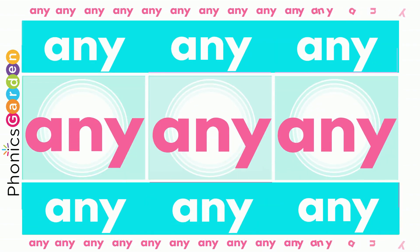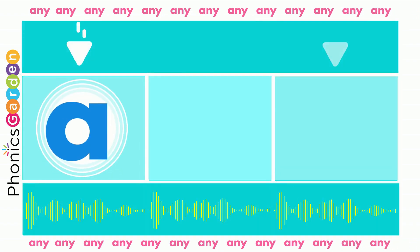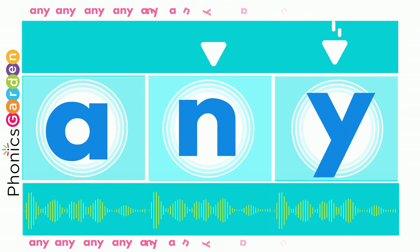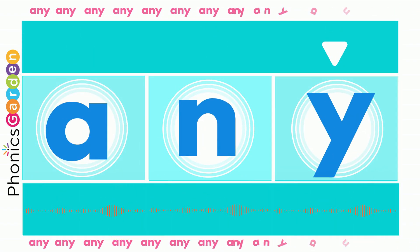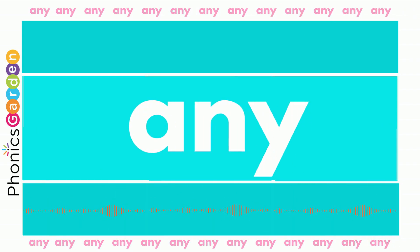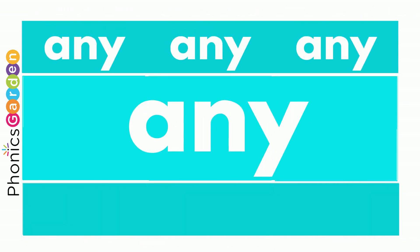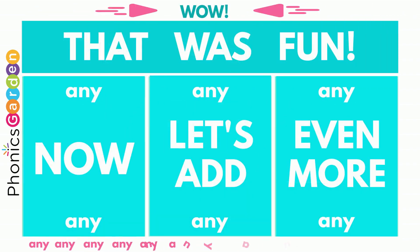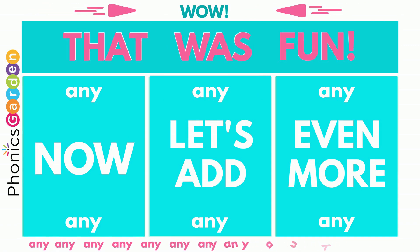Any, any. Use an A, use an A, end it with a Y. A-N-Y spells the word 'any'. And then you read the new word: any, any, any. Wow, that was fun!